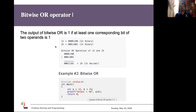Now let's look at the bitwise OR operator using the same two numbers. When you apply OR to each bit of the data, the result is 1 if any of the bits is 1. For example, 0 OR 1 is 1; 0 OR 0 is 0; 1 OR 0 is 1; 1 OR 1 is also 1. The final bit pattern for 12 OR 25 equals 29 in decimal. When you run that program you will see 29 as the output after applying a | b.